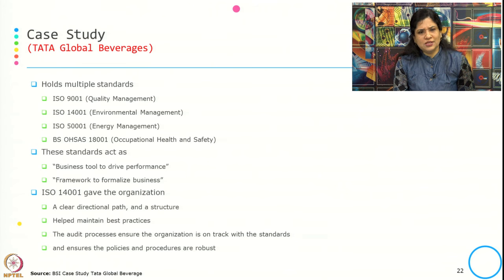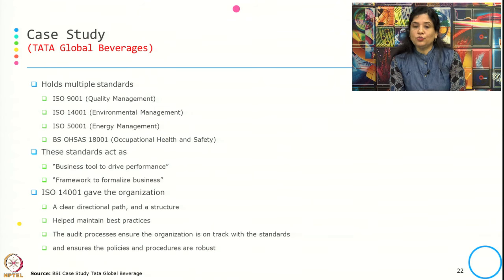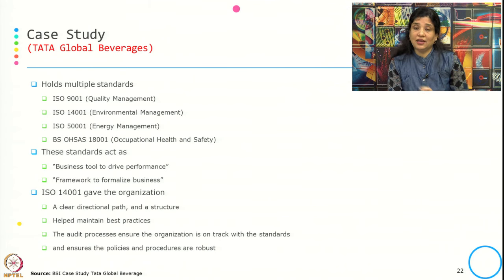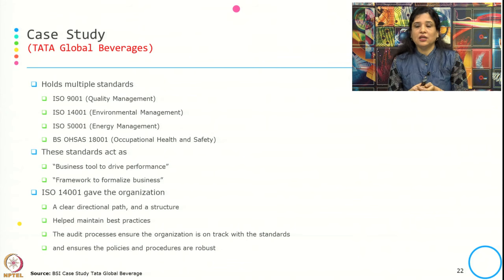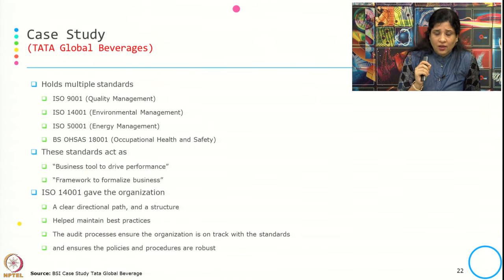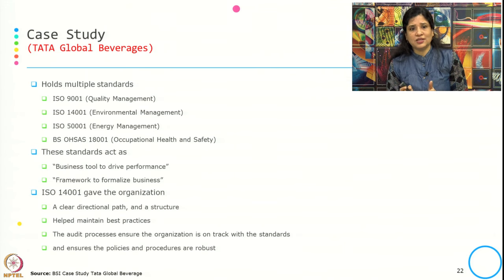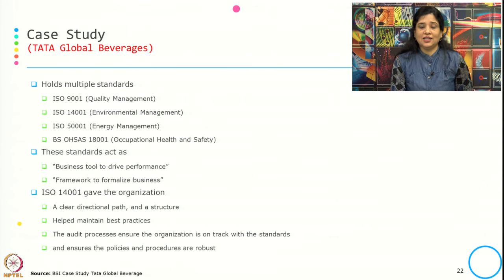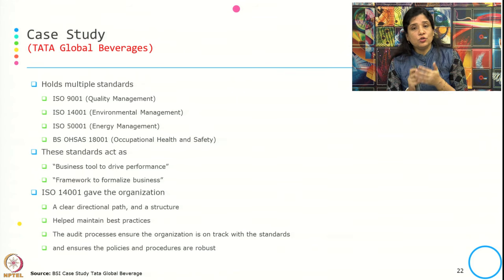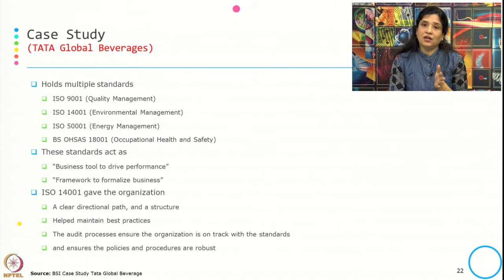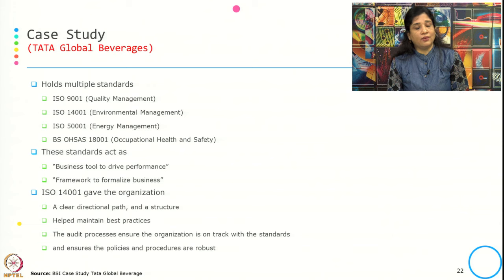Based on statements from their interviews, the standards act as a business tool to drive performance and as a framework to formalize business. ISO 14001 gave the organization a clear directional path and structure, helping to maintain best practices. The audit process ensures the organization is on track with the standard and that policies and procedures are robust. Overall, standards provide a framework, a path, and a structure that ensures the organization maintains best practices.